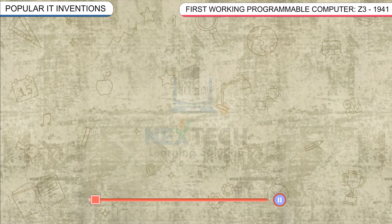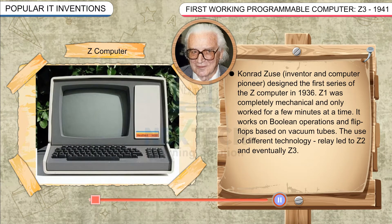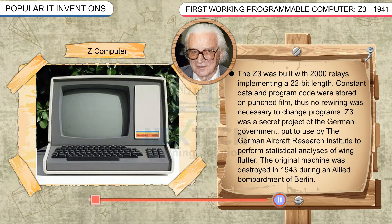First Working Programmable Computer, 1941: Konrad Zuse, inventor and computer pioneer, designed the first series of Z computers in 1936. Z1 was completely mechanical and only worked for a few minutes at a time. It worked on Boolean operations and flip-flops based on vacuum tubes. Using relay technology led to Z2 and eventually Z3. The Z3 was built with 2,000 relays, implementing a 22-bit word length. Constant data and program code was stored on punched film, so no rewiring was necessary to change programs. Z3 was a secret project of the German government used by the German Aircraft Research Institute to perform statistical analysis of wing flutter. The original machine was destroyed in 1943 during a bombardment of Berlin.